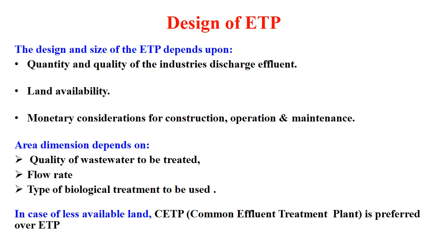The area dimension depends on the quality of wastewater to be treated, flow rate, and type of biological treatment to be used. In cases of less available land, we can go for a common effluent treatment plant so that land can be saved. So when not much land is available, a common ETP can serve multiple industries.